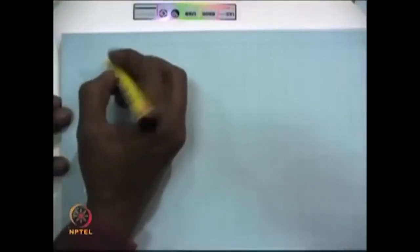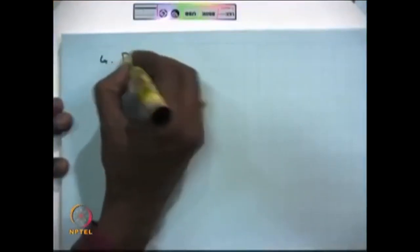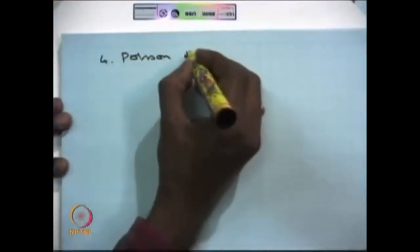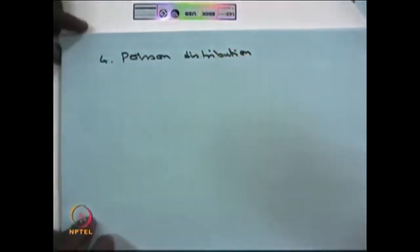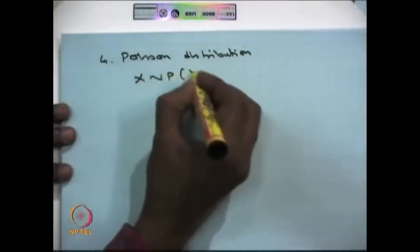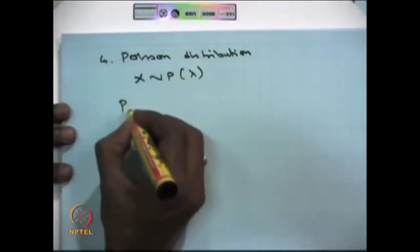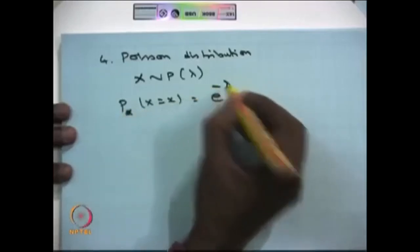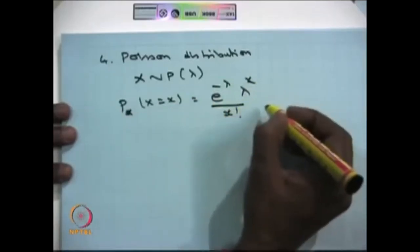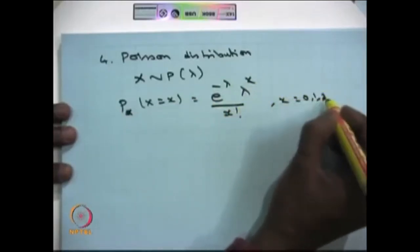In addition to the discrete uniform, binomial, and geometric distributions, the fourth important discrete distribution is the Poisson distribution. When the discrete random variable X is Poisson distributed with parameter lambda, the probability mass function is e^(-lambda) * lambda^x / x!, where x takes values 0, 1, 2, and so on.